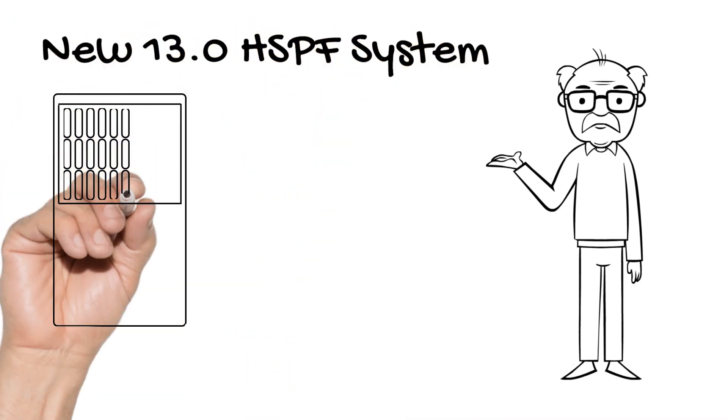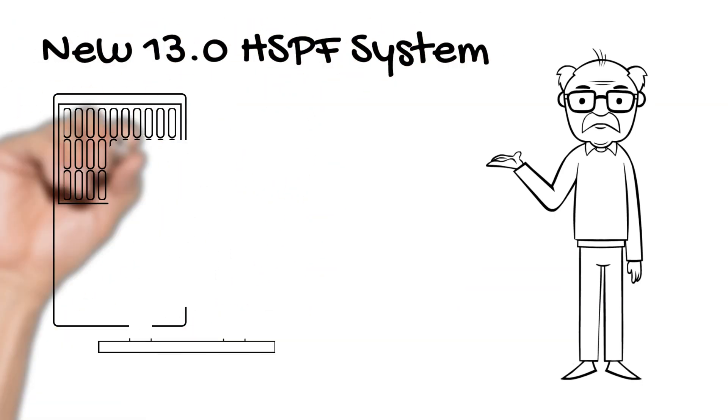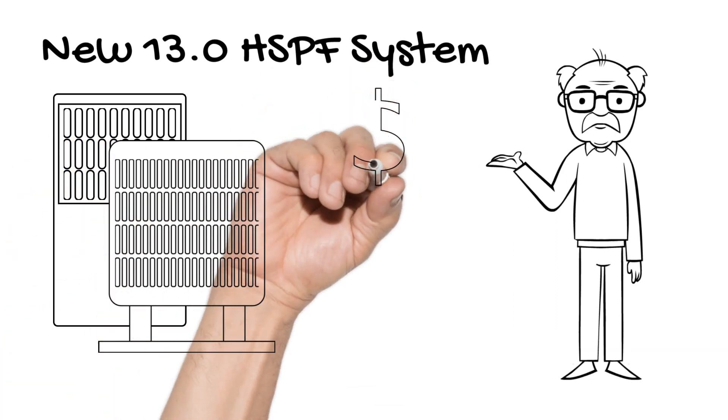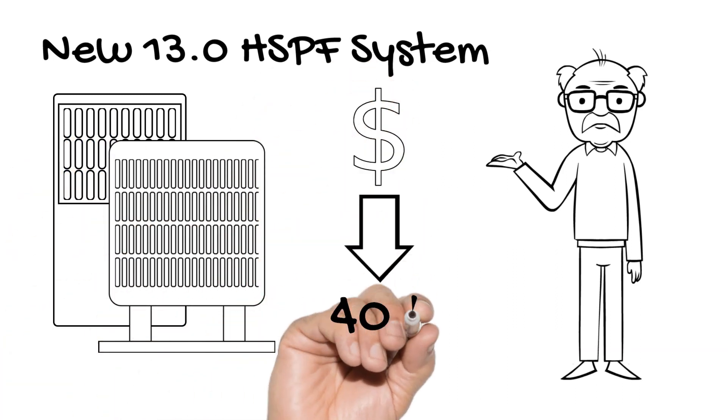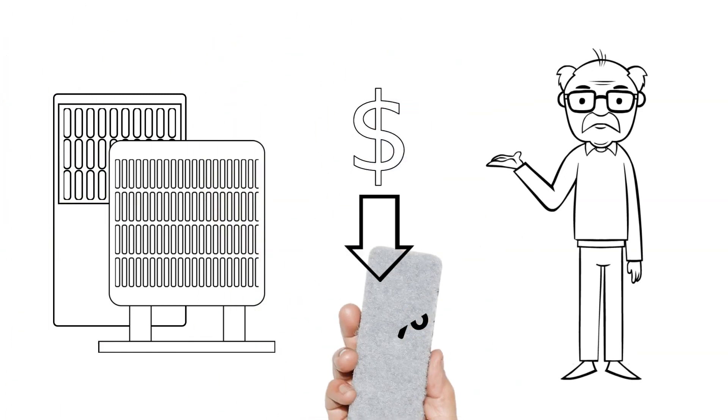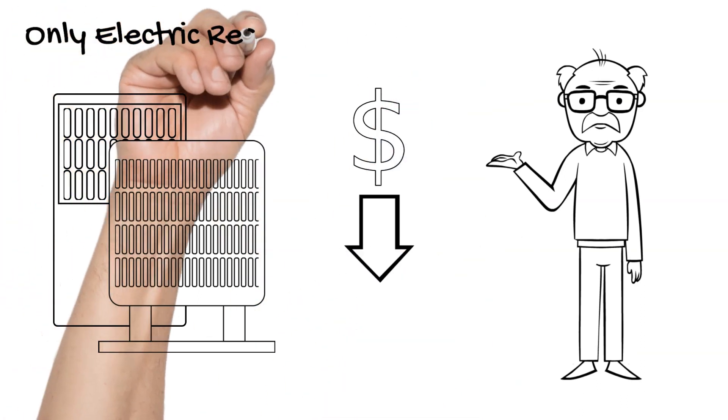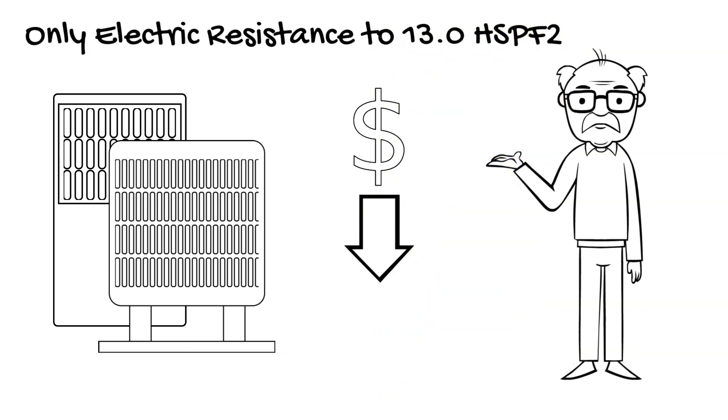It is not uncommon for some older heat pump systems to have an HSPF of 6.0 or even lower. If that is your situation, a new 13 HSPF2 system would reduce your heating cost by over 40%. If you are using only electric resistance heating, a 13.0 HSPF2 would reduce your heating bill by a whopping 70%.